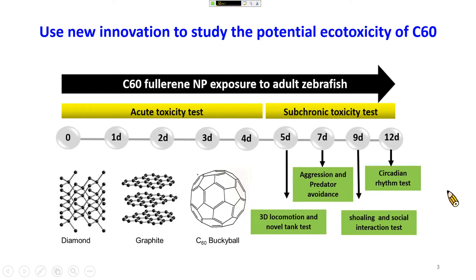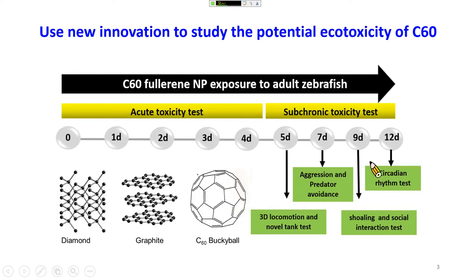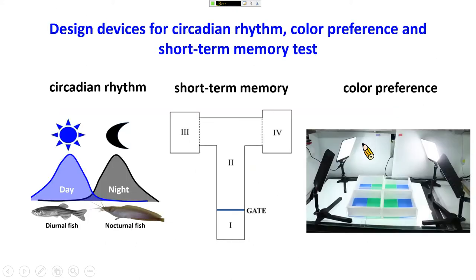After long-term incubation, we sacrifice the fish to do the ELISA. But before sacrifice, we test a lot of different behavioral endpoints — for example, locomotion, aggression, predator avoidance, social interaction, circadian rhythm, and memory. Today I would like to introduce three different tools we recently published.